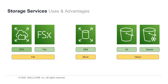It's important to know what services you will find in AWS for storage, but it's also important to know when to use them. To store files, the best services are EFS and FSX. To store blocks, EBS is the right choice. And if you want to store objects, you would use S3 or Glacier.